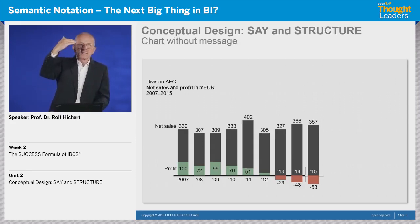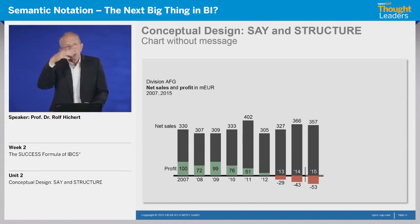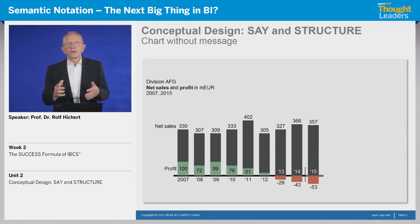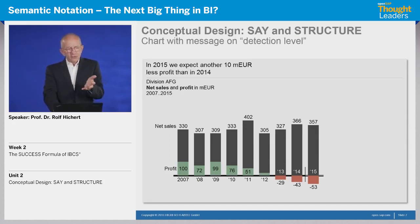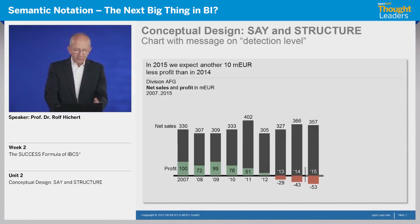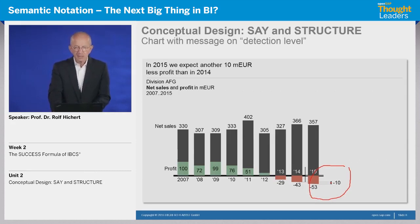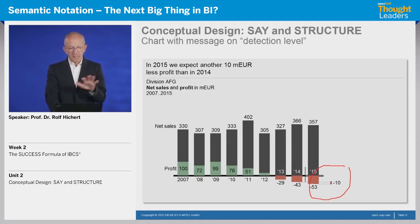The second level is an explanation, because something happened. And the third level, even on top, would be a suggestion — a recommendation — what we should do to change or achieve something. Starting with detection: in 2015 we expect another 10 million less profit than in 2014. What is very important here is that this has to be highlighted. You can see a little circle around this minus 10 million to underline what I have said. This is a detection level.